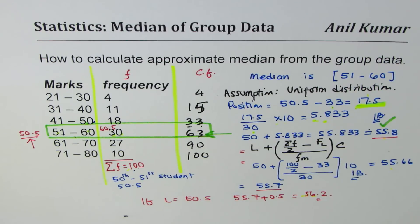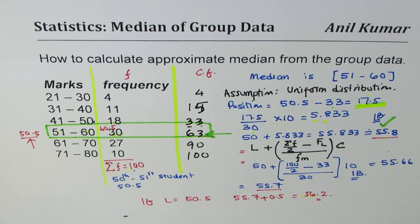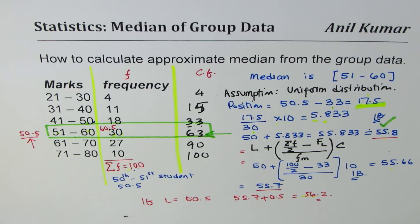Adding this to the lower bound of the median class gives us our answer of 55.8. I am Anil Kumar and I hope this strategy helps you find the median of grouped data. Since the value is approximate, all these methods give answers somewhere between 55 and 56, which is fairly accurate. Please put some likes, and if you have doubts, ask questions — thank you and all the best.